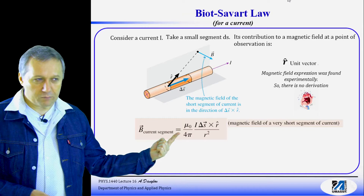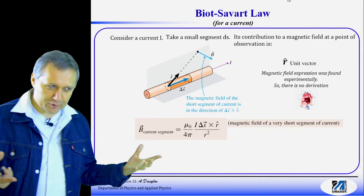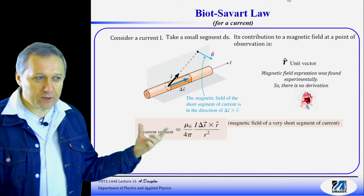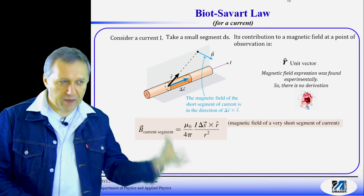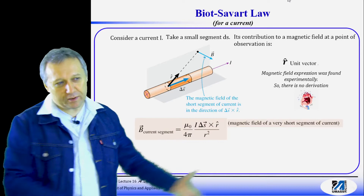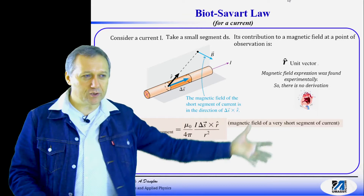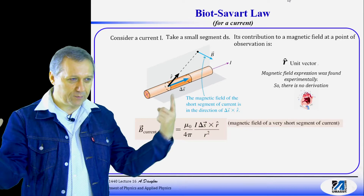First, there's a new symbol: mu-naught. We've never seen this before. It is a universal constant called the permeability of free space. Think of this constant as a parameter describing the magnetic properties of vacuum. It's sort of like epsilon-naught in the world of electricity - epsilon-naught describes electric properties of vacuum, mu-naught describes magnetic properties of vacuum. They play similar roles in different worlds.